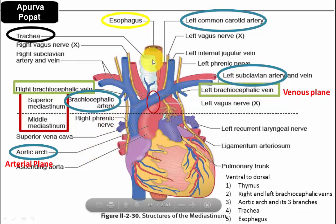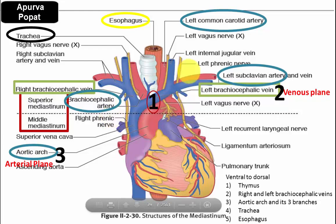Just behind the trachea is the esophagus. So from ventral to dorsal in the superior mediastinum: thymus, venous plane (left and right brachiocephalic veins), arterial plane (aorta and its three branches — brachiocephalic artery, left common carotid, left subclavian), then trachea, and finally esophagus.